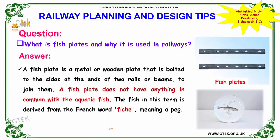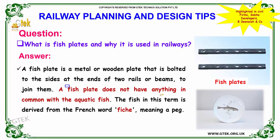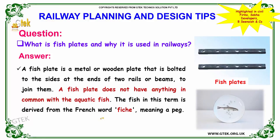The next question: what is a fish plate and why is it used in railways? A fish plate is a metal or wooden plate that is bolted to the sides at the ends of two rails or beams in order to join them. The word 'fish' in this term is derived from the French word 'fiche', meaning a peg.